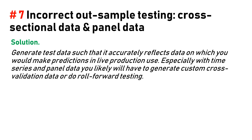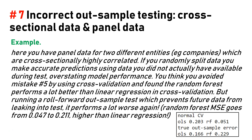Solution: generate test data that accurately reflects the data on which you would make predictions in production. Especially with time series and panel data, you will likely need to generate custom cross-validation data or do roll-forward testing. Example: if you have panel data for two different entities — for example, companies — that are cross-sectionally correlated, randomly splitting data inflates performance. A roll-forward out-of-sample test shows random forest's mean squared error going from 0.047 to 0.211 — higher than linear regression.